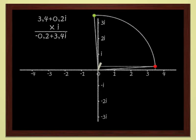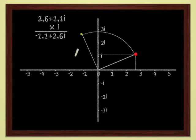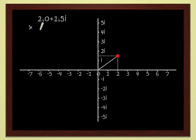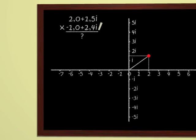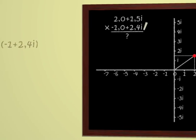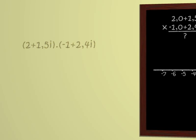And finally, we can multiply any two complex numbers with no problem whatsoever. For instance, let's try to multiply 2 plus 1.5i and 1 plus 2.4i. We proceed as usual. We first multiply by 2 and then by 1.5i and we add the results.